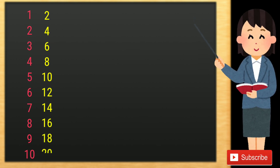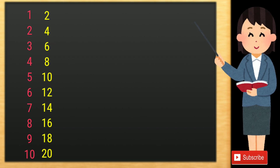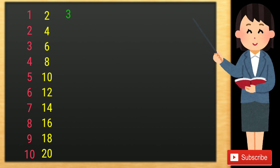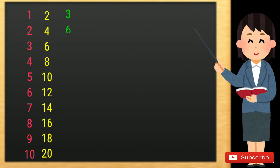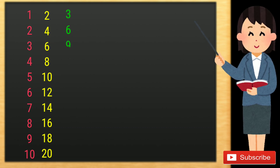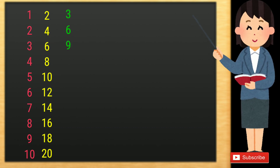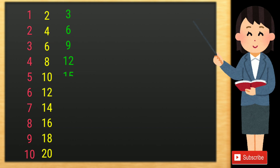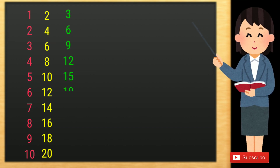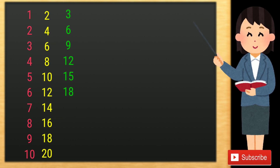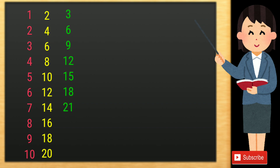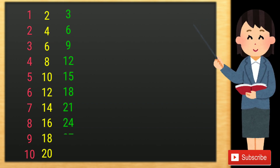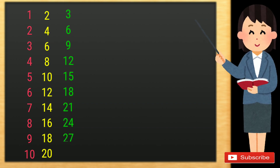2 10s are 20. 3 1s are 3, 3 2s are 6, 3 3s are 9, 3 4s are 12, 3 5s are 15, 3 6s are 18, 3 7s are 21, 3 8s are 24, 3 9s are 27.